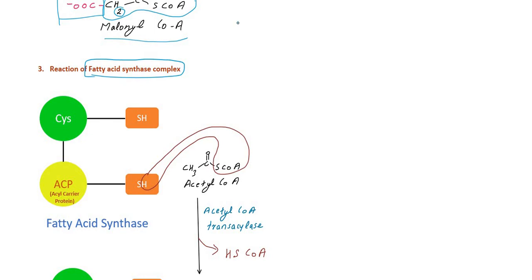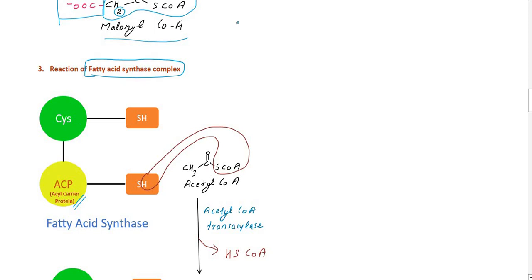Now for the fatty acid synthase complex. The complex has an acyl carrier protein (ACP) with a phosphopantetheine arm ending in an SH group, and also a cysteine residue with its own SH (sulfhydryl) group. These two SH groups — one on the ACP residue and one on the cysteine residue — are the active sites of the fatty acid synthase complex.